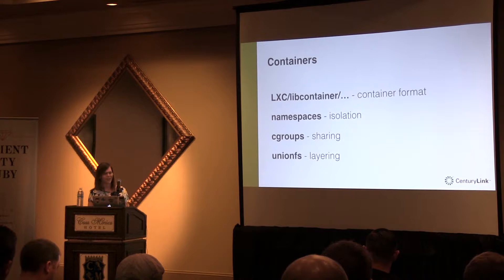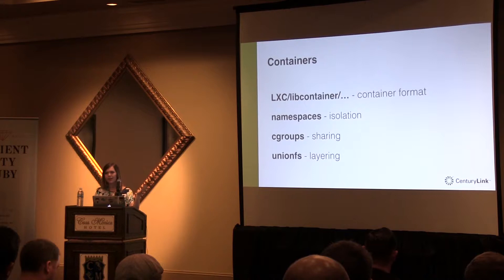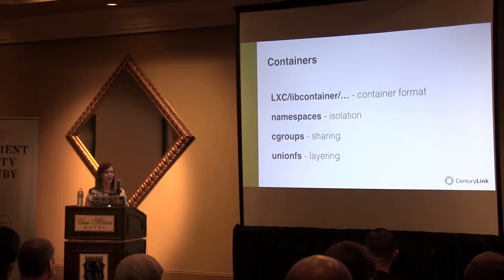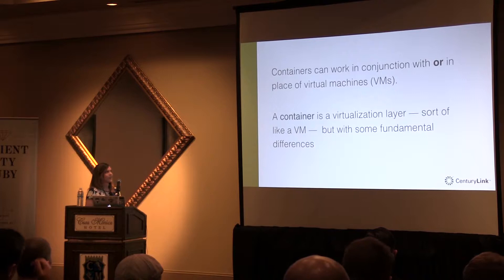My very favorite part is the file system. Containers use a union file system — it's a write-on-copy file system, super fast, basically just layers and layers. Think of it like your GitHub repository: there's a point in time for each layer. If you mess up on the top three layers, you can revert back to that fourth layer and rebuild from there without rebuilding everything from start to finish. Toward the end of the talk I'm going to do some live coding, so we'll see how this layering works.